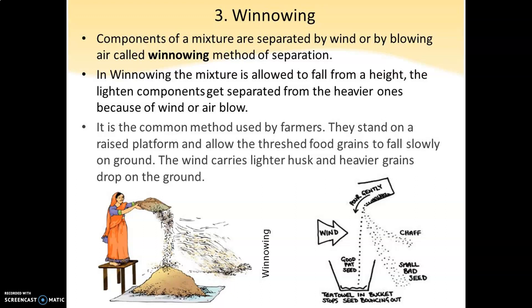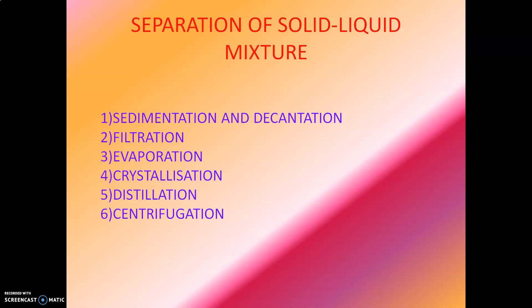As you can see in the slide, this lady is standing at a height and she is using the process of winnowing. The grains, being heavier, are settling down, while the shafts and the husk are being blown away by the wind. So this method is called winnowing.